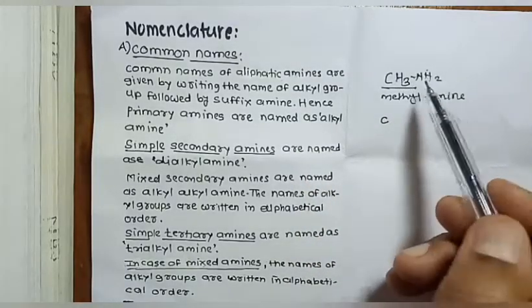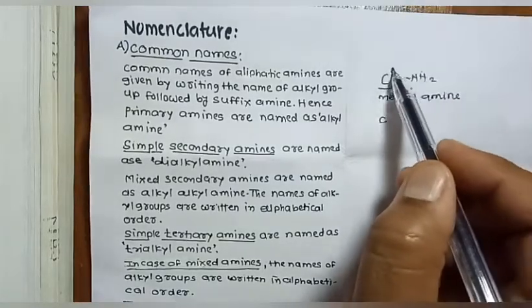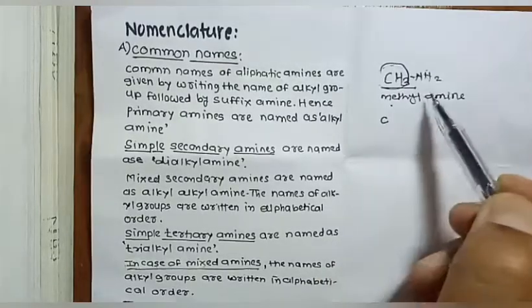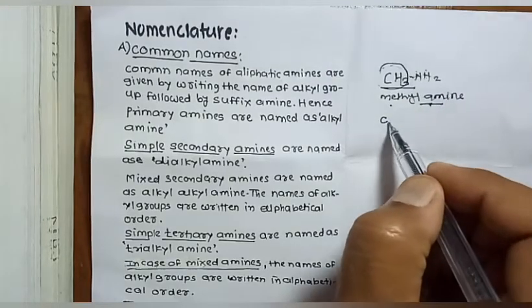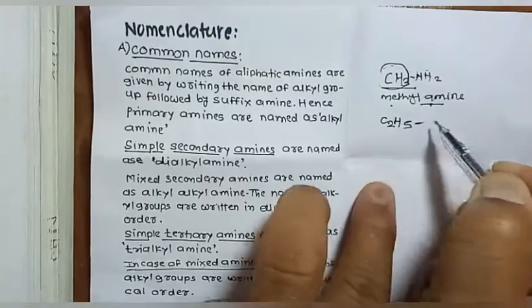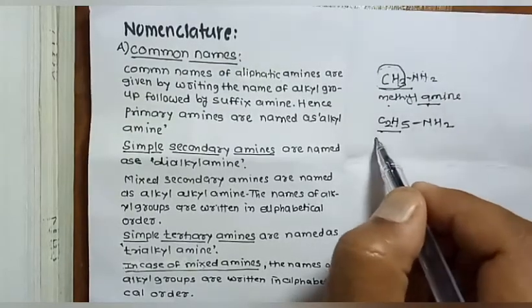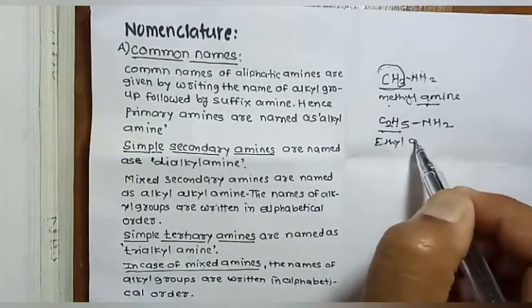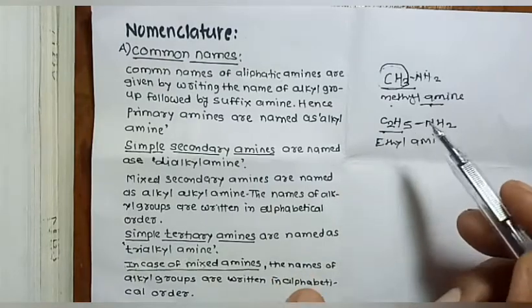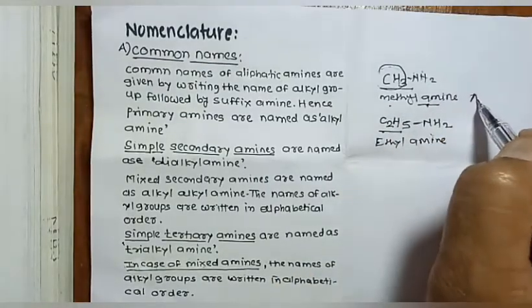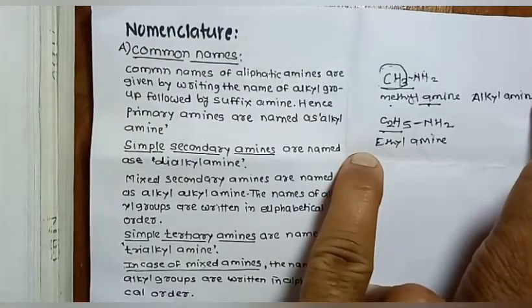For example, if the structure is CH₃NH₂, we write the name of the alkyl group — that is 'methyl' — followed by 'amine', giving the common name 'methylamine'. Similarly, C₂H₅NH₂ contains an ethyl group, so it is 'ethylamine'. Therefore, these amines are named as alkyl amines.